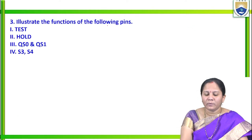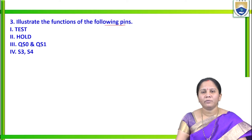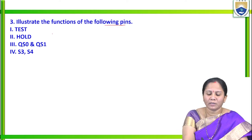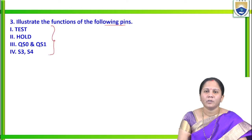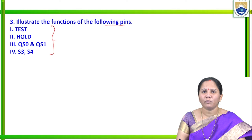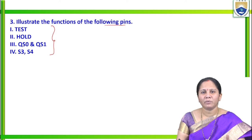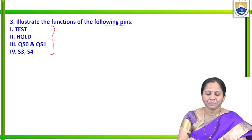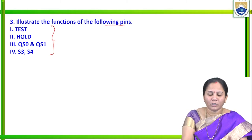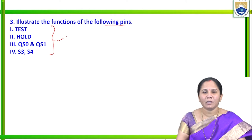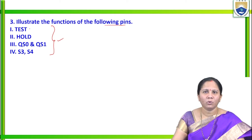The third question asks to illustrate the function of the following pins. 8086 microprocessor is a 40-pin IC, and those 40 pins are classified into three groups: some signals have common functionality in both minimum and maximum mode, some have different functionality in minimum mode, and some have different functionality in maximum mode. Here, four pins are asked about: TEST̄, HOLD, QS0/QS1, and S3/S4.